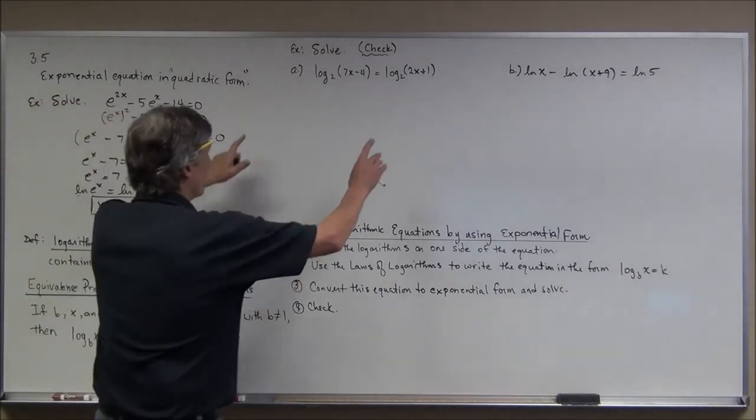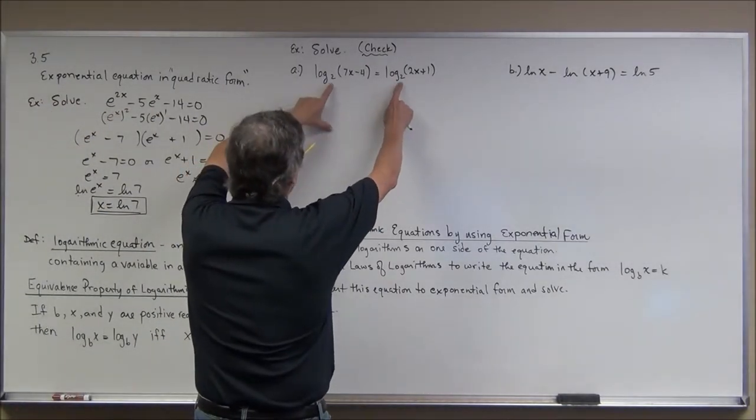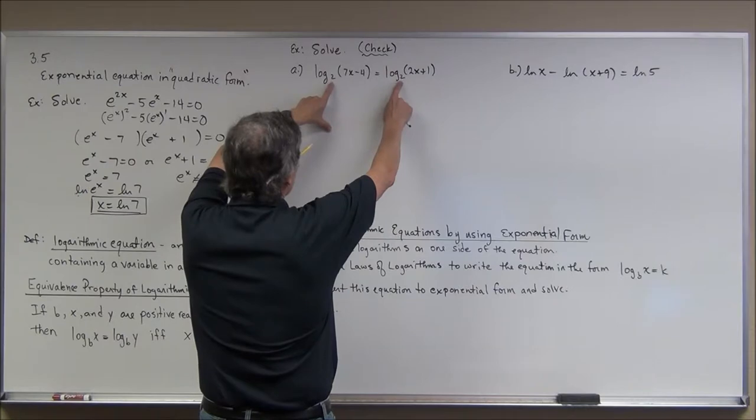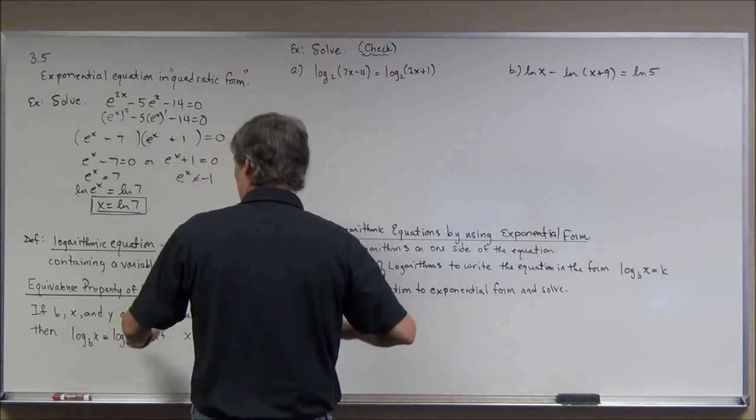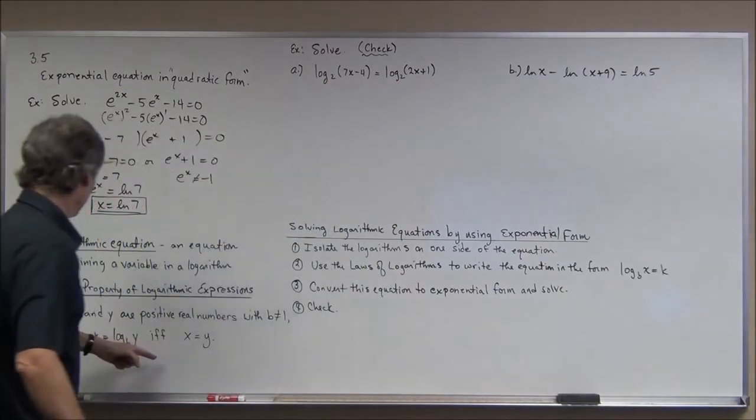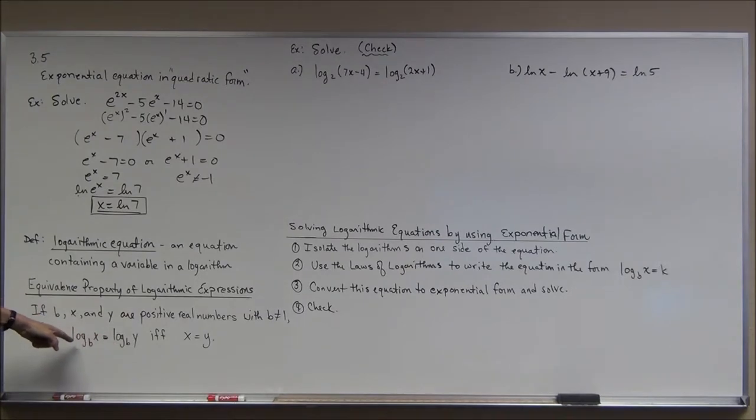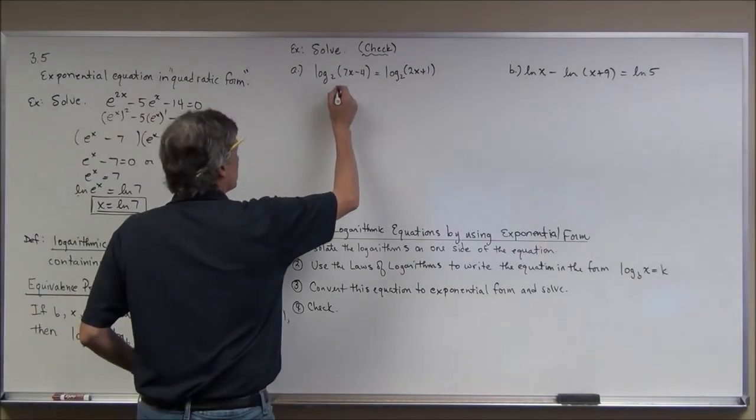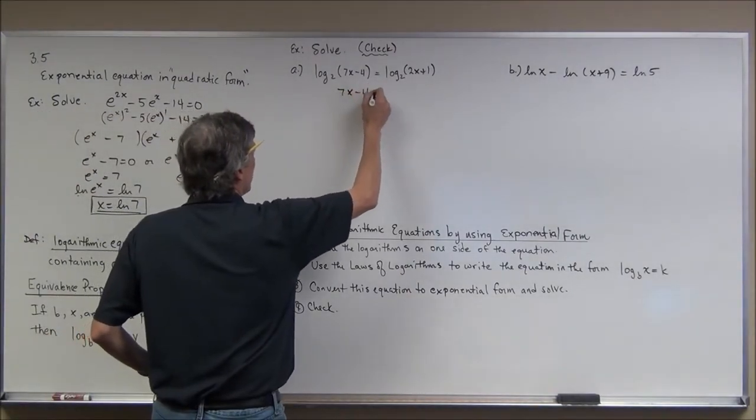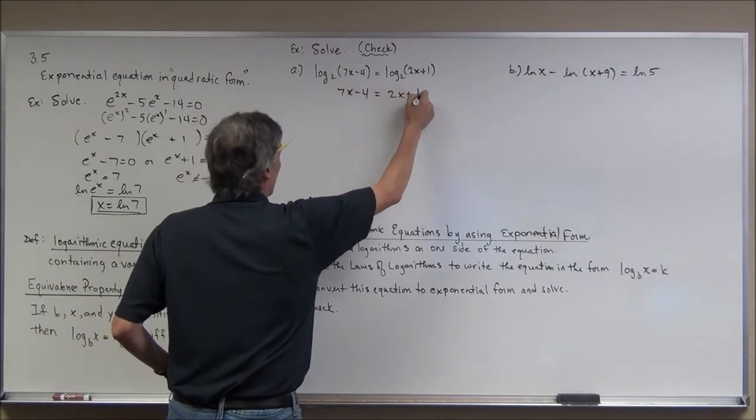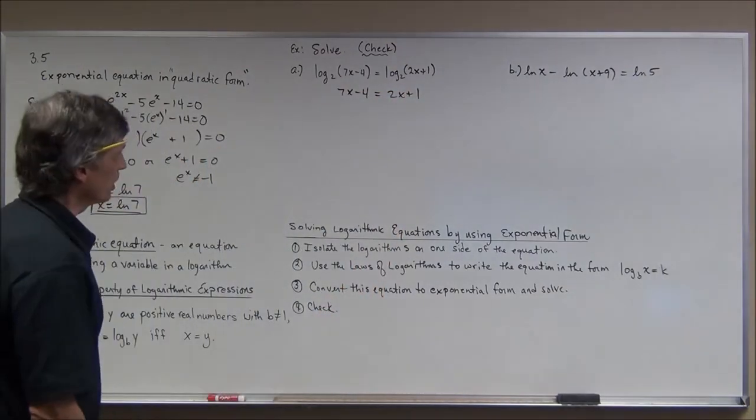The first example, right away, I'm in good shape here. Look what I have. I have two base two logarithms. So I can go right to this property back here, this equivalence property of logarithmic expression, and I can set 7x minus 4 equal to 2x plus 1.